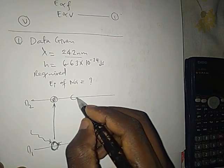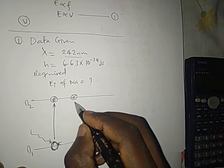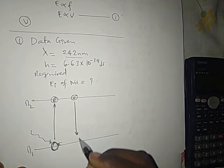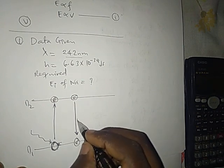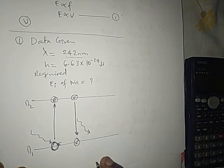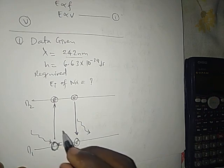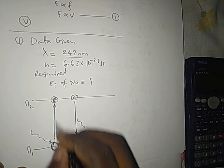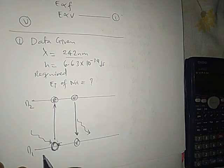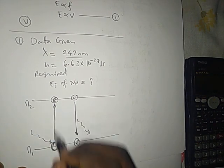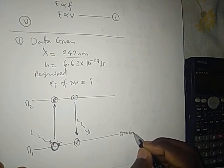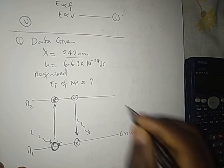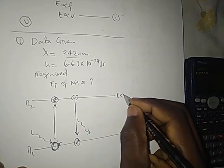When the electron comes back down to the first energy level, which is the ground state, it emits energy. Going up it absorbs; coming down it emits. This is what we call excitation. The lower position is the ground state, and the higher position is the excited state.